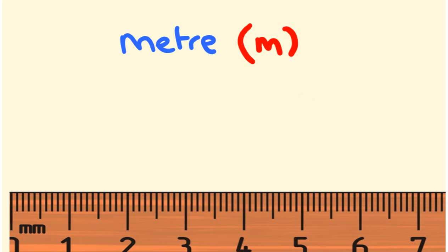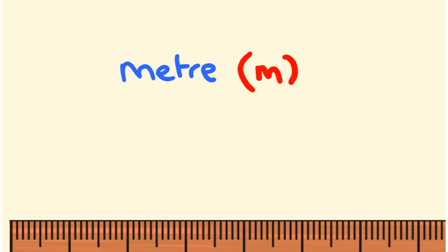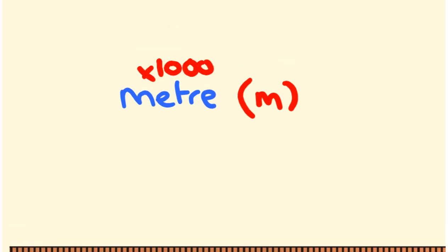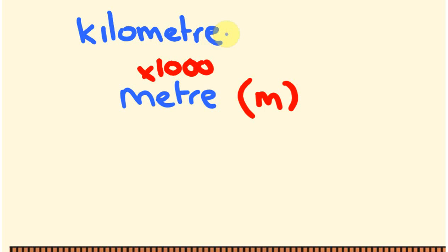If you get a thousand metres — say a thousand steps — you end up with what's known as a kilometre. It's about the distance of a thousand fair-size steps. It's also the unit we use to measure distance between cities. So a thousand metres is called a kilometre, written as km.